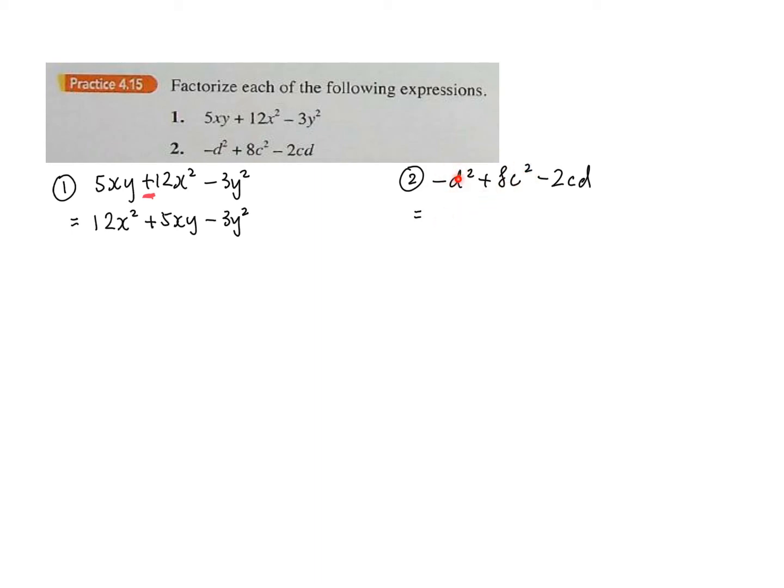If you want to use D squared, you can choose negative. You can choose negative, so it will be D squared plus 2cd and minus 8c squared.